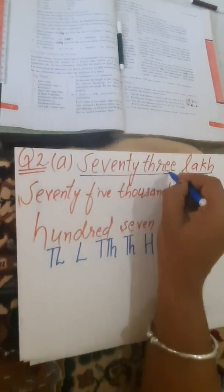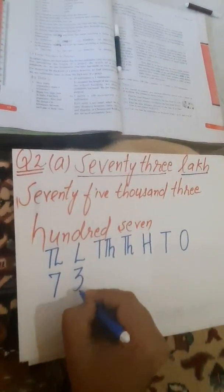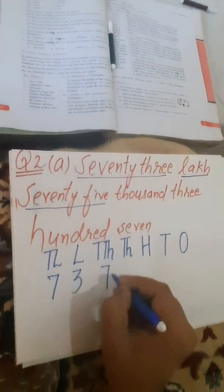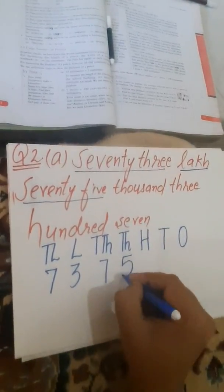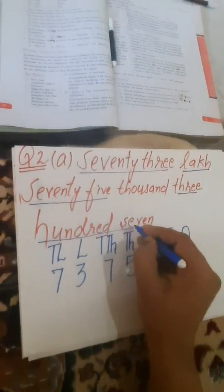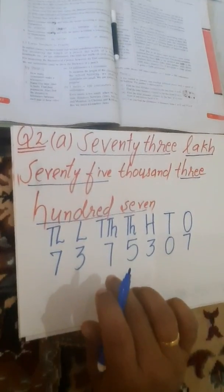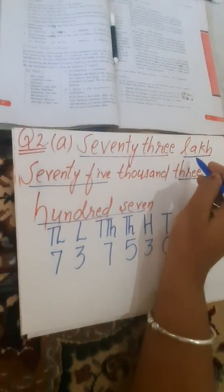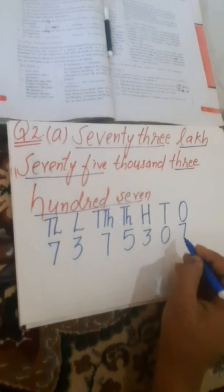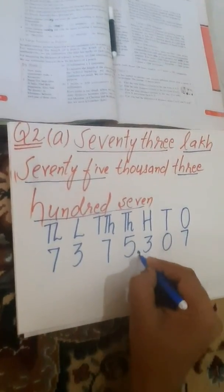Now I have 73 lakh, so I will write 7 and 3 below the lakh place. Then 75,000 — I will write 7 below ten thousands and 5 below thousands. Then 307 — I will write 3 below hundreds, 0 below tens, and 7 below ones. Now I need to place commas. As this is in the Indian system, I will place commas according to Indian system of numeration: 3 digits from the right, then skip 2 digits, then insert comma.